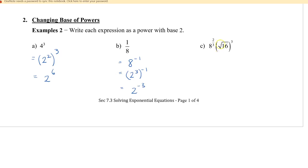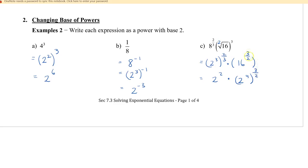The last example has two terms multiplied together. 8 to the 2 thirds can be rewritten as 8 cubed to the 2 thirds, which simplifies to 2 squared since 3 times 2 thirds equals 2. For the 16, we rewrite it as 2 to the power of 4, still raised to the power of 3 over 2. So 4 times 3 over 2 is 6. We then have 2 squared times 2 to the 6, and adding the exponents gives 2 to the 8.